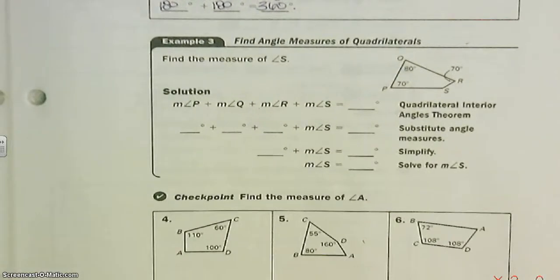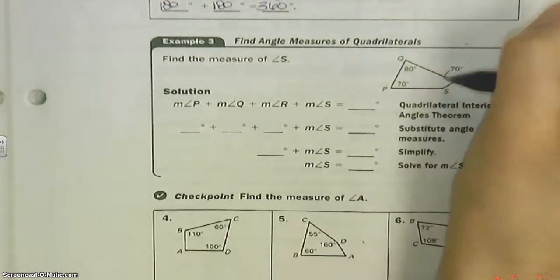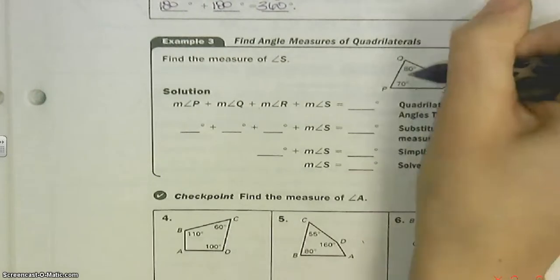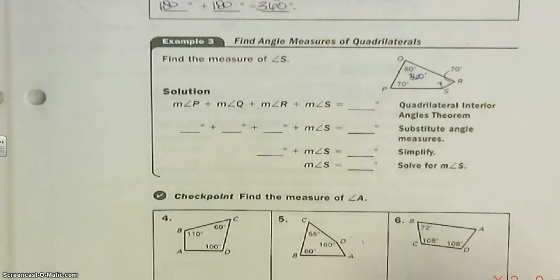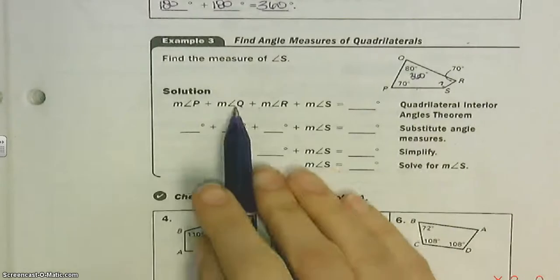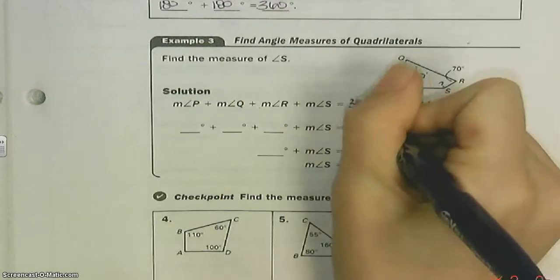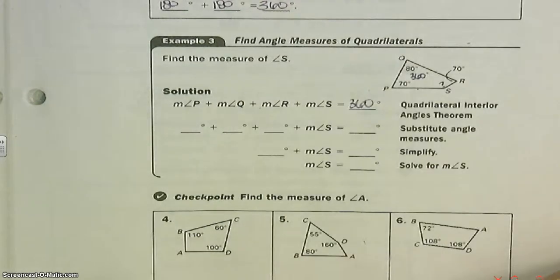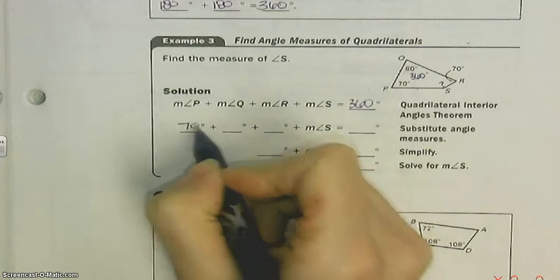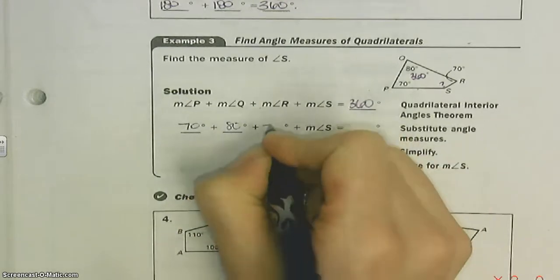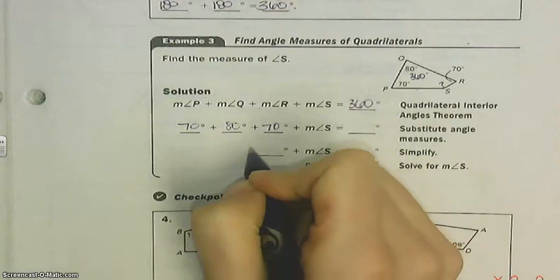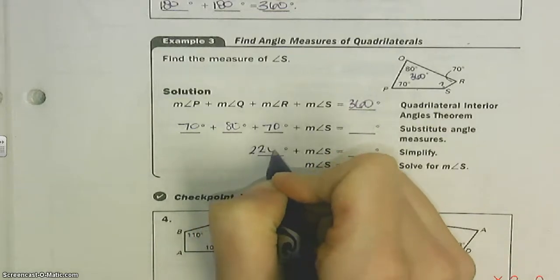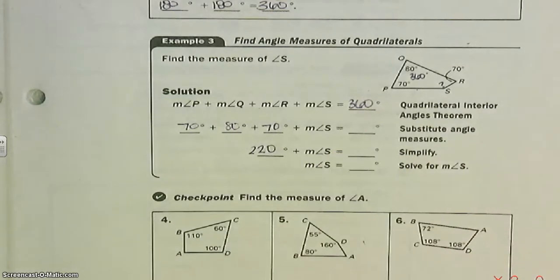So here's an example. We need to find angle S. Well, this is a one, two, three, four—this is a quad. So there's 360 degrees. How many more degrees do we need? That's what we're looking for right there. So we know that all four of them added together equals 360. How many degrees do I already have? I already have 70, I already have 80, I already have 70. That's a total of 220 degrees. So I already have 220 degrees.